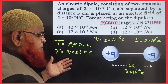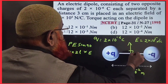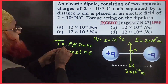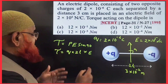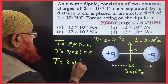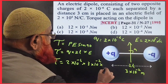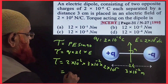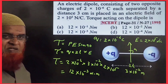The dipole and electric field are perpendicular to each other, making 90 degrees. So sine 90° = 1. The electric dipole moment is Q times the distance between the two charges. Therefore torque equals 2 × 10⁻⁶ (charge Q) times 3 × 10⁻² (distance 2L) times 2 × 10⁵ (field E), giving a final answer of 2 × 10⁻³ newton meter.